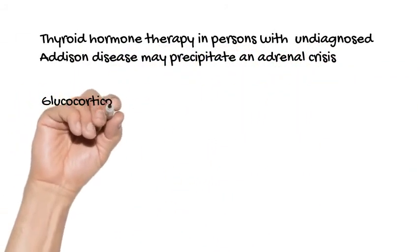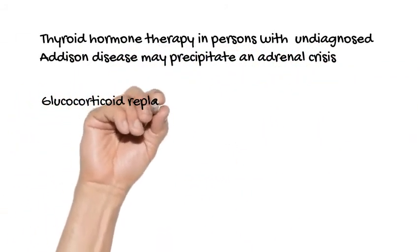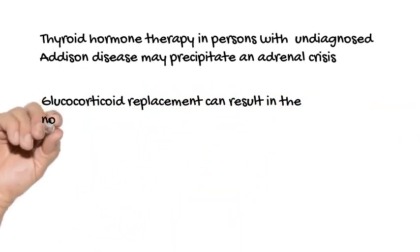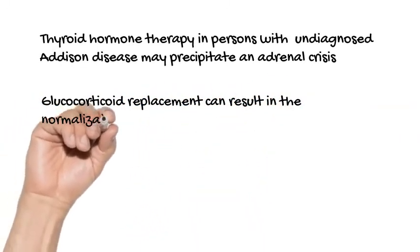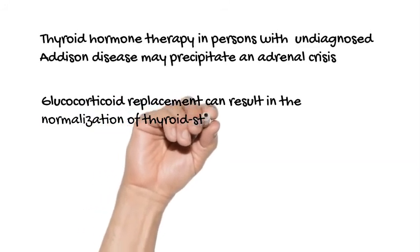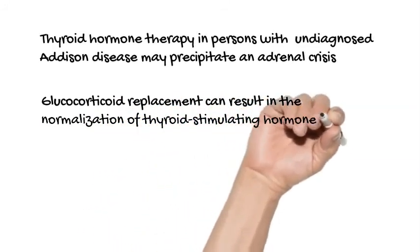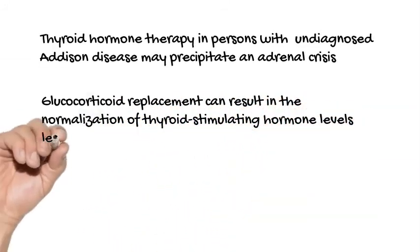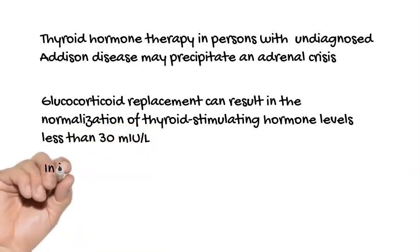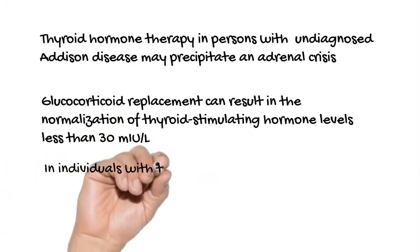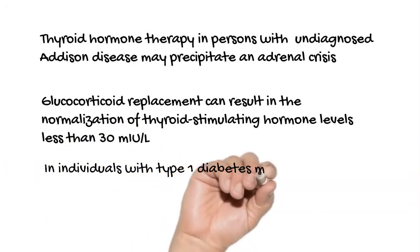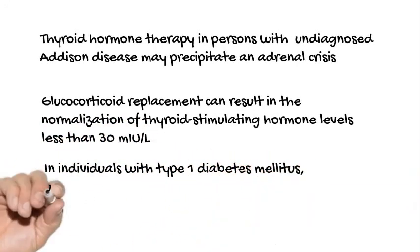In addition, patients with a new diagnosis can have a reversible increase in thyroid stimulating hormone levels because glucocorticoids inhibit secretion. Glucocorticoid replacement can result in the normalization of thyroid stimulating hormone levels less than 30 mIU per liter.